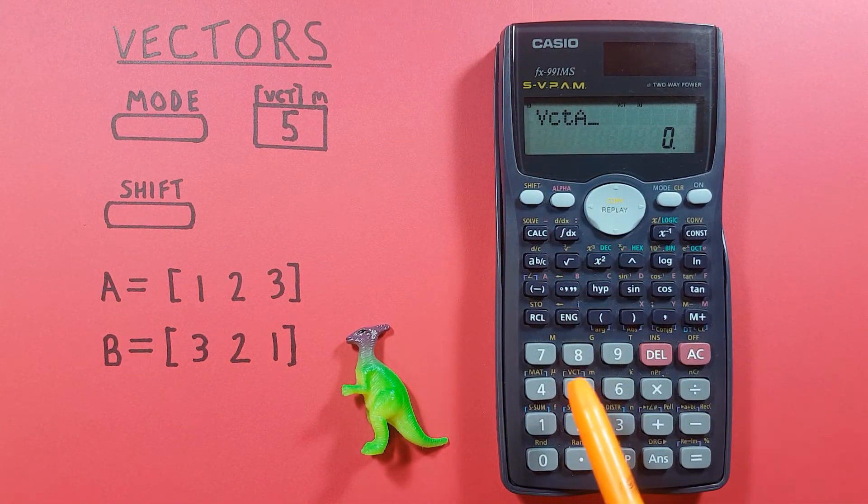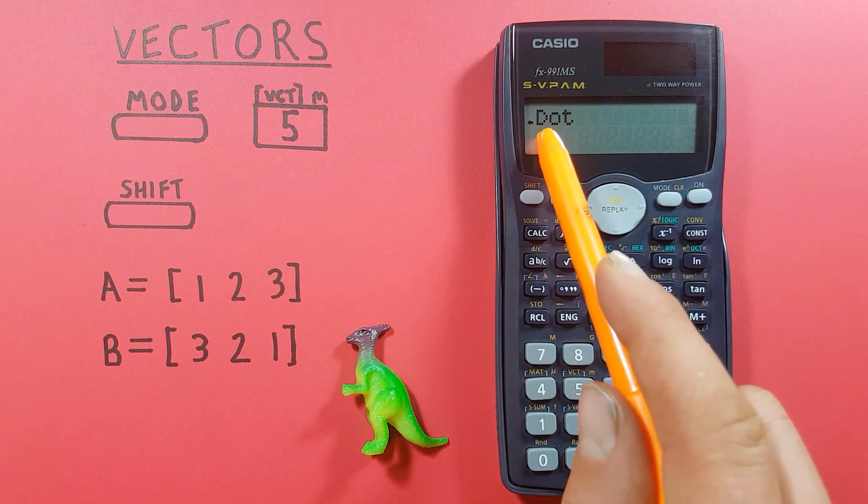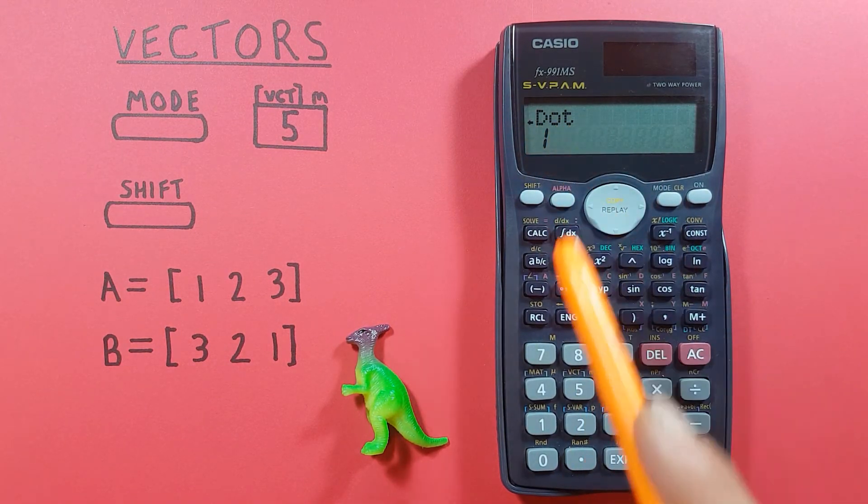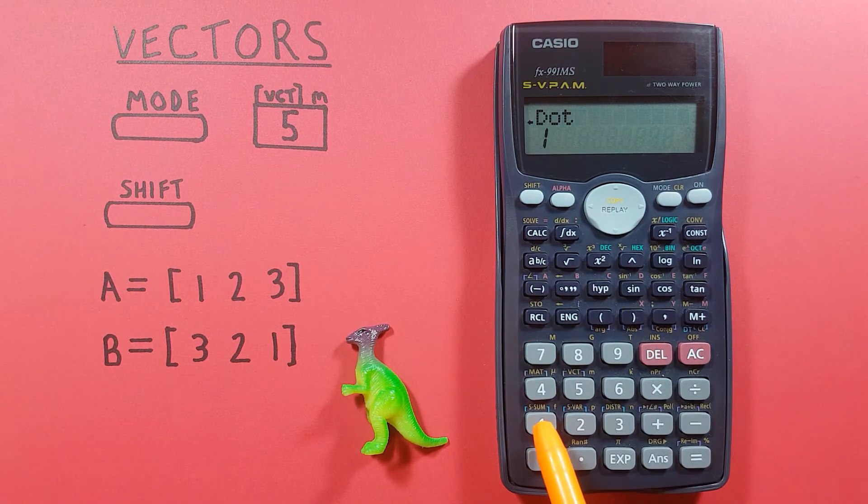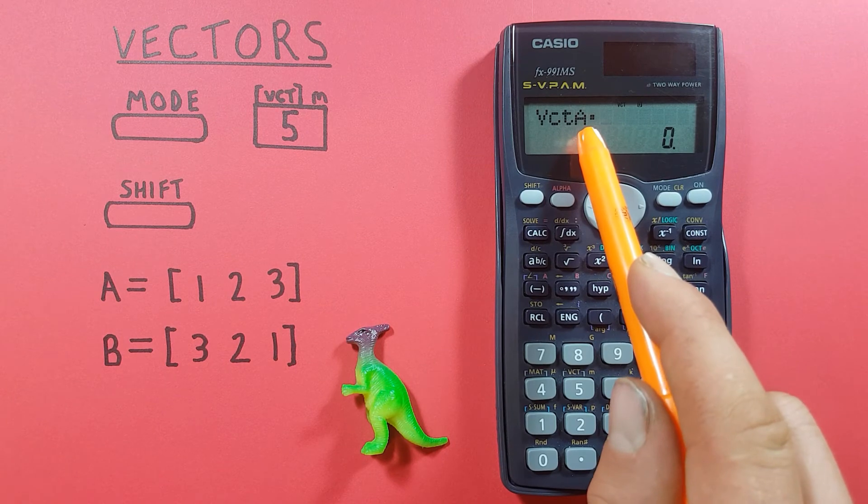And then we go shift 5 back here and if we scroll to the right once you can see we have a DOT here as our first option. So we'll press 1 and we now have a dot there after vector A, that's indicating the dot product.